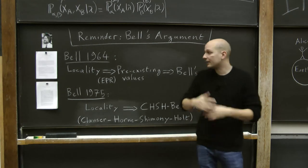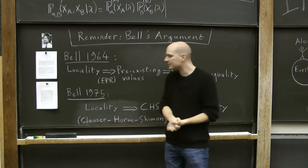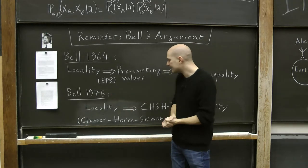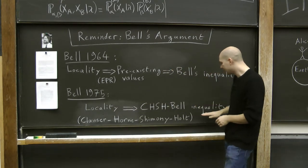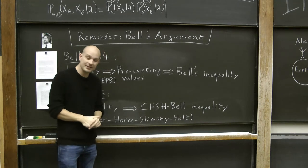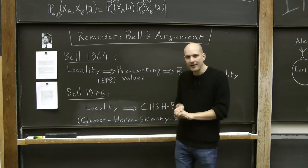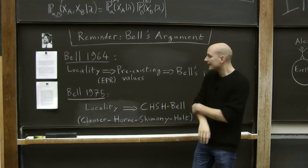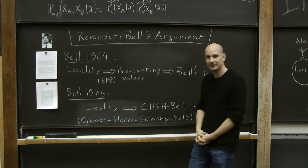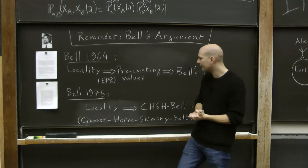In this video I'll present a proof of Bell's inequality, but I won't cover that 1964 implication. Instead I'll talk about a later theorem published by Bell in 1975, which combines both implications: the assumption of locality directly implies an inequality called the CHSH-Bell inequality. CHSH stands for the last names of Clauser, Horne, Shimony, and Holt. I'm discussing the 1975 version for two reasons: it is more general, applying to pretty much any reasonable probabilistic theory of nature, and it goes directly from locality to the inequality without discussing pre-existing values.